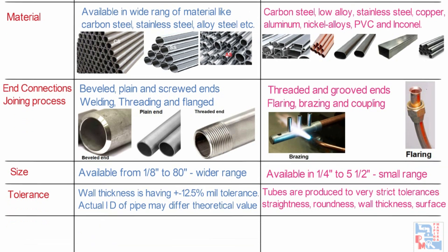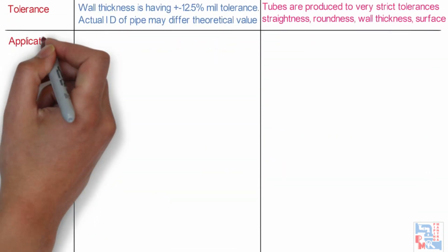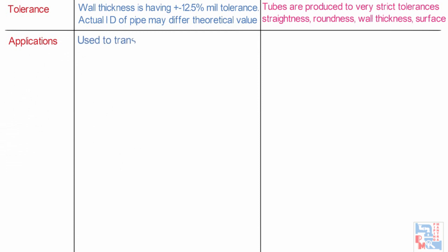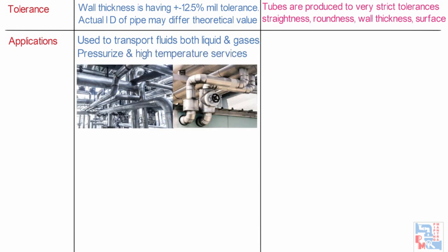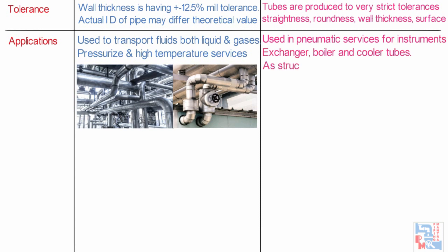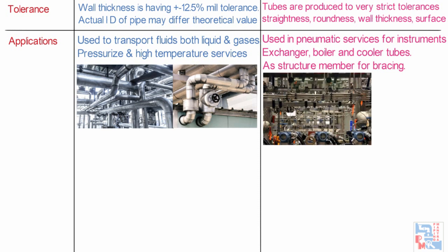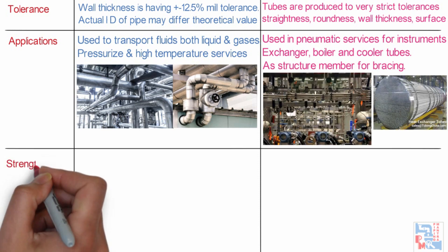Now let's look at applications. Pipes are used to transport fluids like liquids and gases, majorly used for pressurized and high-temperature services. For tubes, in the oil and gas industry, they are used as instrument tubing for pneumatic services. Tubes are also used in exchangers, boilers, and coolers, and as structural members for bracing.